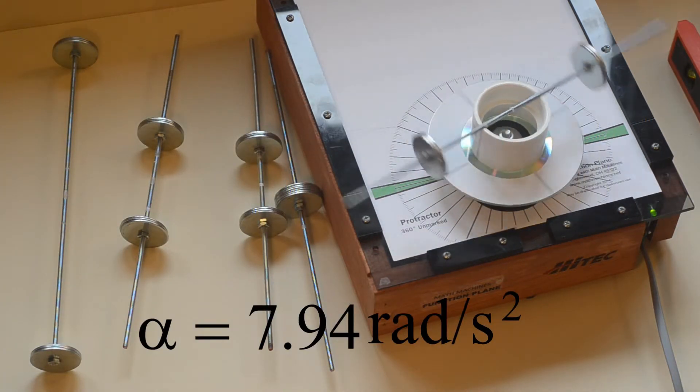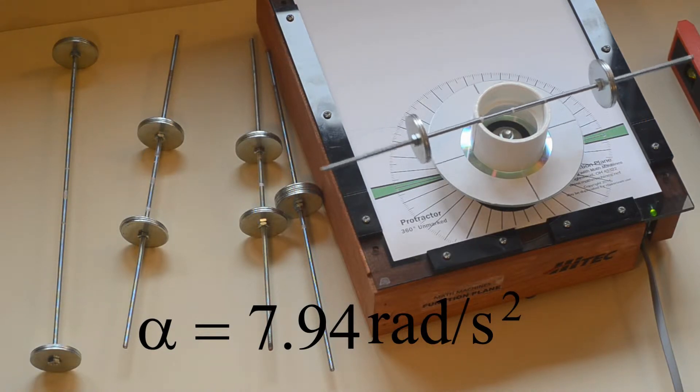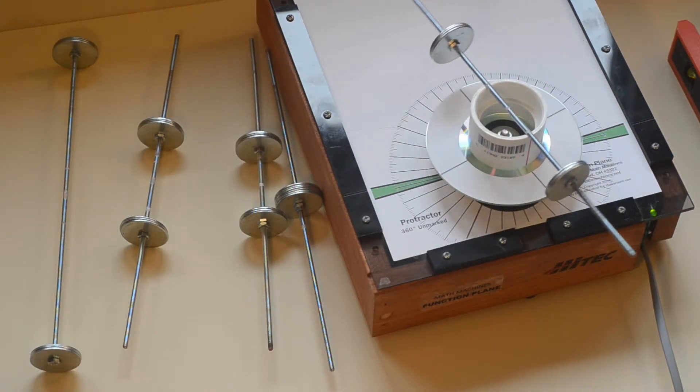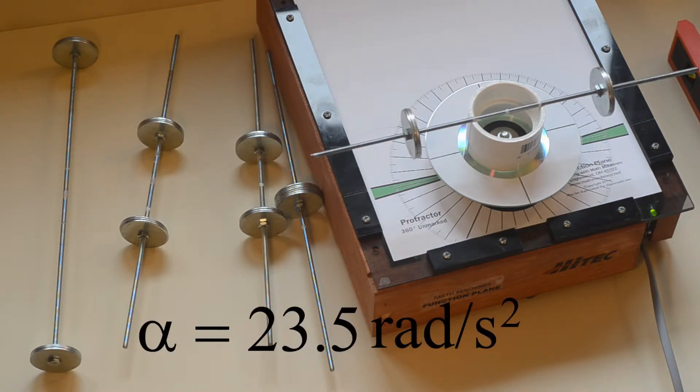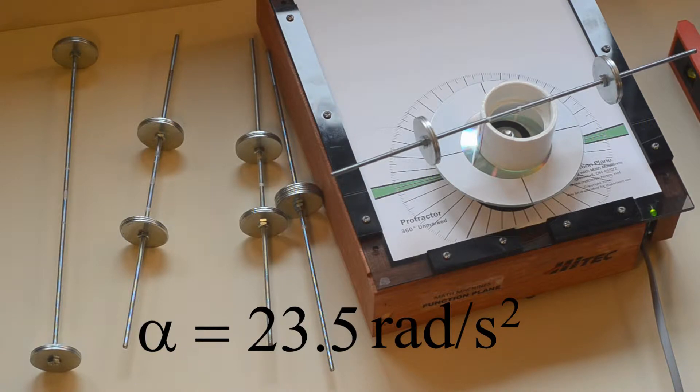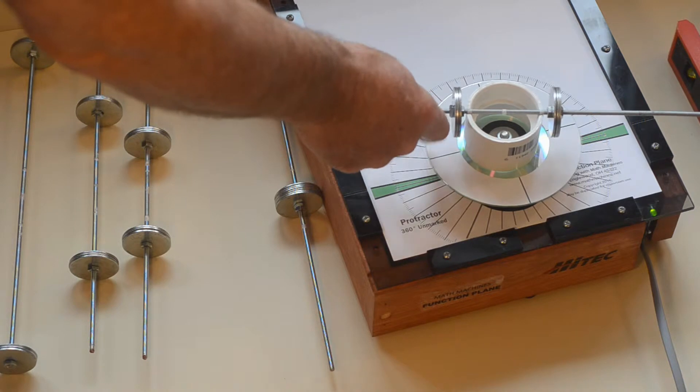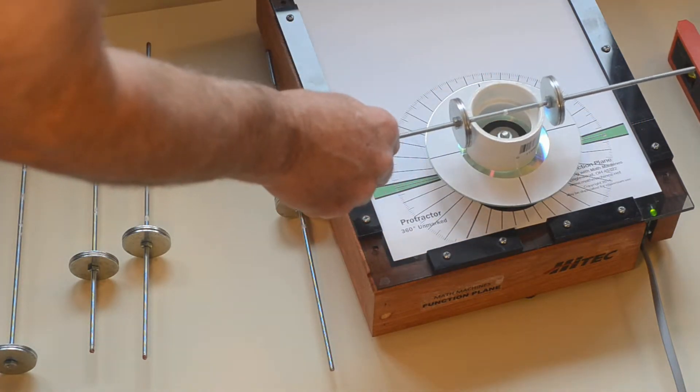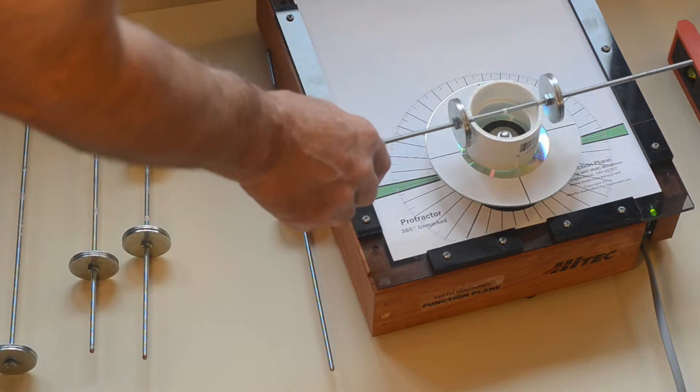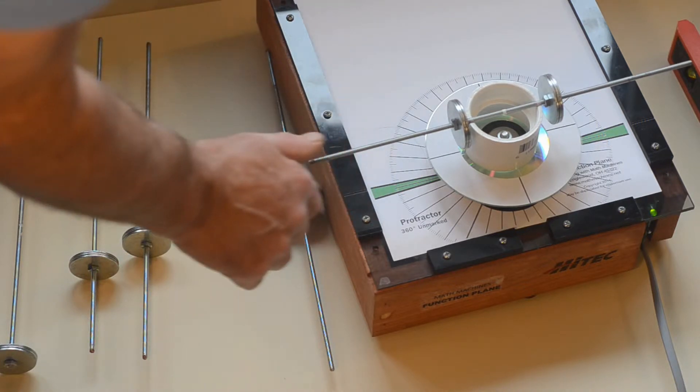For the second configuration, our theory predicts reliable results with accelerations up to 7.94 radians per second squared. The theory also predicts certain failure if the acceleration is 23.5 or above. With the washers close to the outside of the PVC coupling, the theory predicts that we can have accelerations up to 21 radians per second squared and safe results, but that anything above 62 radians per second squared will give us certain failure.